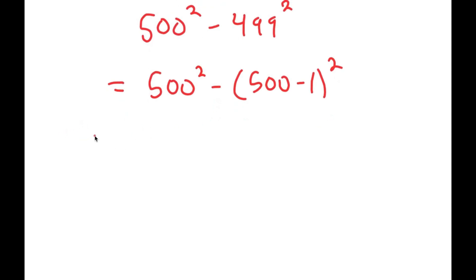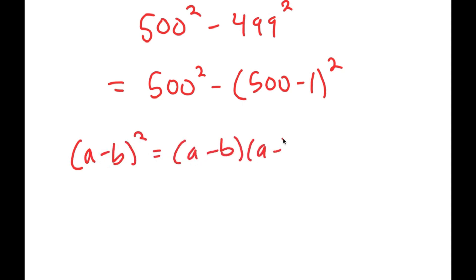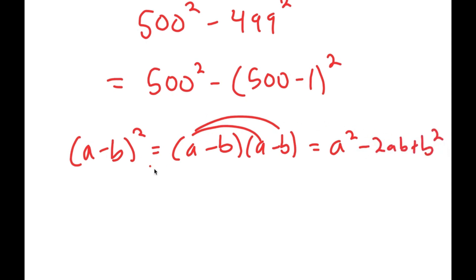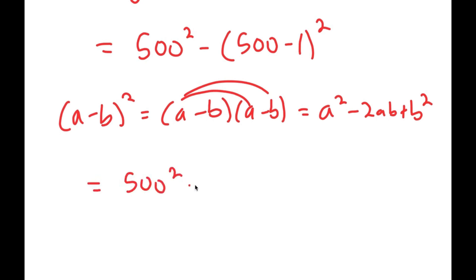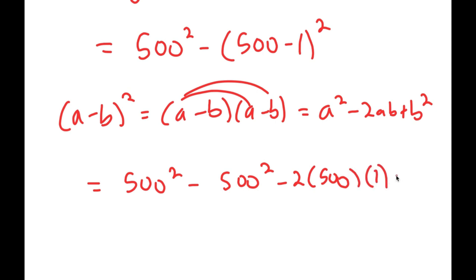If I have something in the form a minus b squared, this is equal to a minus b times a minus b, which factors out to a squared minus 2ab plus b squared. So this turns into 500 squared minus 500 squared minus 2 times 500 times 1 plus 1 squared.